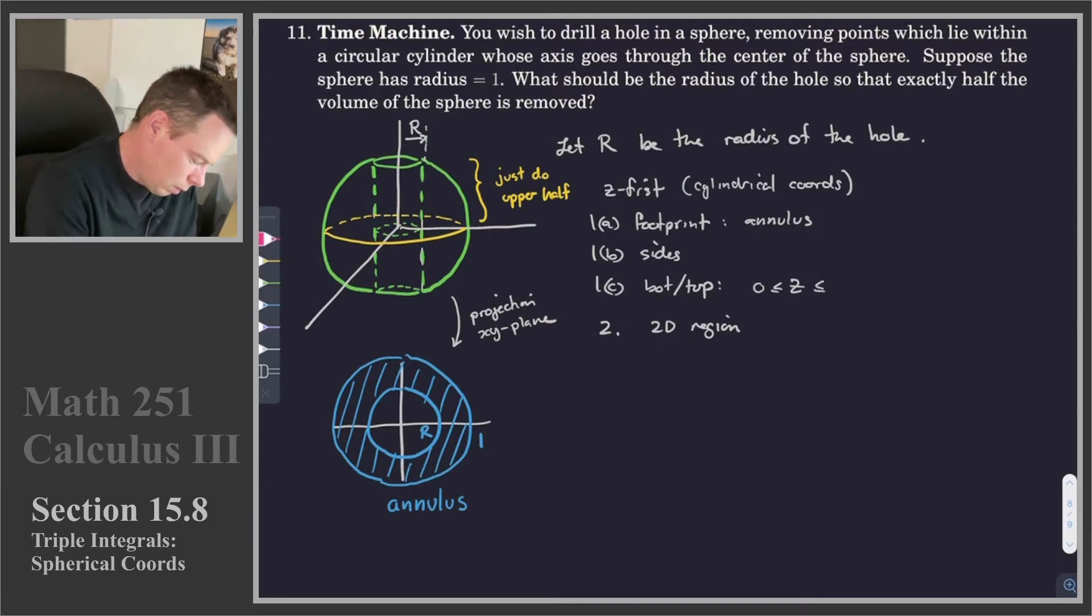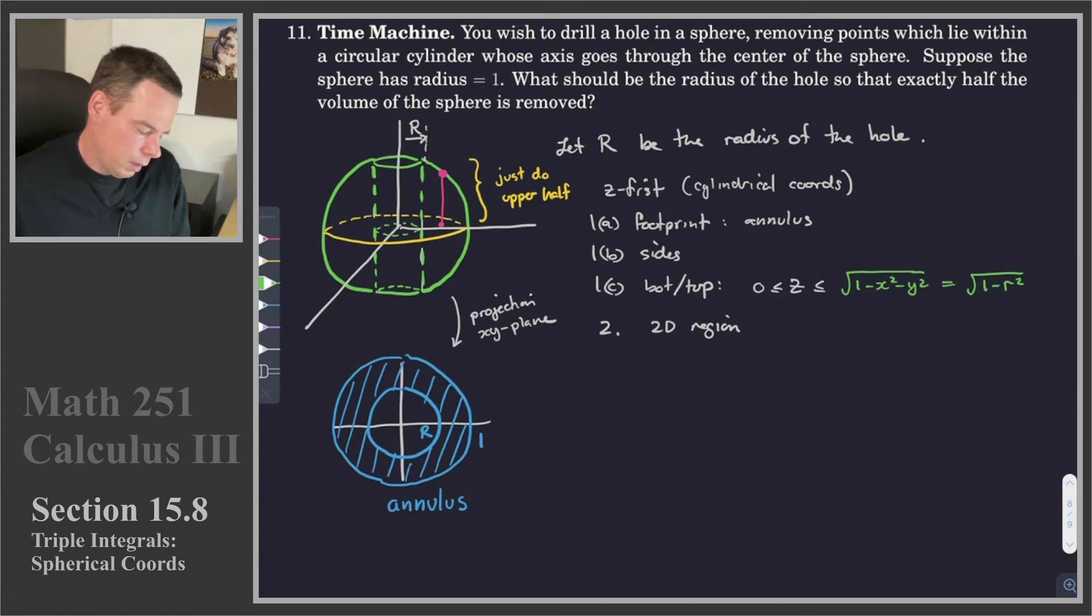So right up to this sphere, which is going to be the square root of 1 minus x squared minus y squared. But if I'm thinking about it in terms of cylindrical coordinates, that's the square root of 1 minus r squared. Okay, so bottom top, not so bad.